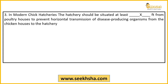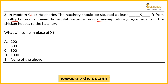Next question: In modern-day chick hatcheries, how far should the hatchery be from the poultry house — where your adult chickens are — so that disease transmission does not occur? If there is a disease in the chicken house, it should not transmit to the young ones in the hatchery. So what is the minimum recommended distance? Options: 200 feet, 500 feet, 800 feet, 1000 feet, or none of the above?